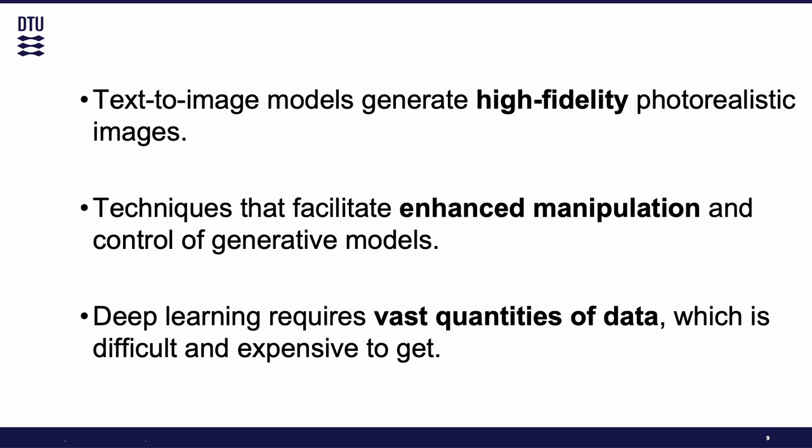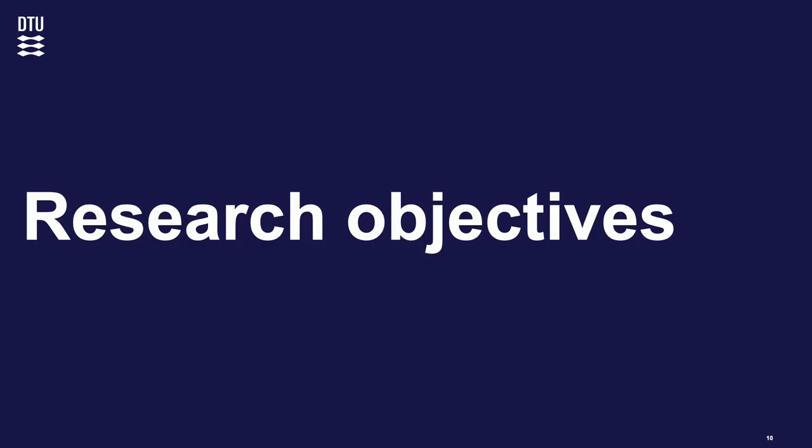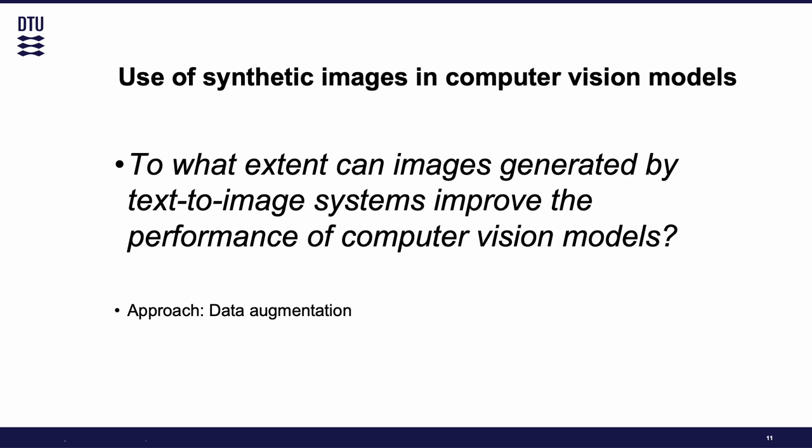Nevertheless, to complete the introduction, we highlight that deep learning requires vast quantities of data, which is usually difficult and expensive to get. With all these facts in mind, let's state the research objectives. It is logical to ask: to what extent can images generated by text-to-image systems improve the performance of computer vision models? This thesis focuses on solving this question from the deep learning perspective, through an experimental framework to test synthetic images generated by the stable diffusion model on several classical computer vision tasks, specifically through the lens of data augmentation with a focus on classification and segmentation problems.